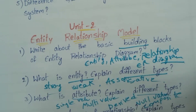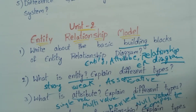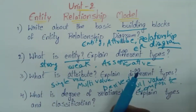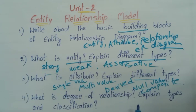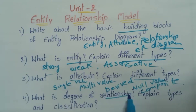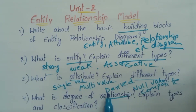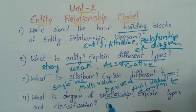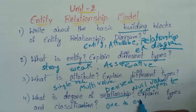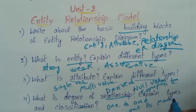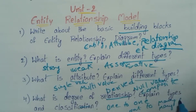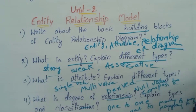These are the attribute types. Describe Weak Entity with diagrams. Next, what is the Degree of Relationship? Explain types and classification. Relationship classification includes: 1 to 1, 1 to many, many to many, and many to one.